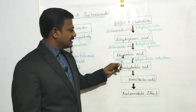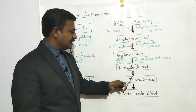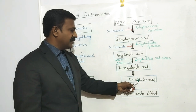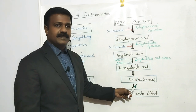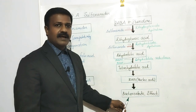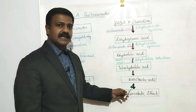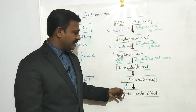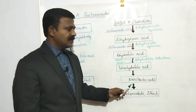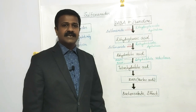So, once it inhibits these steps, it does not allow the synthesis of folic acid. Therefore, there is no formation of nucleic acid in the bacteria, and thereby it produces the bacteriostatic effect — it does not kill the bacteria but prevents the growth and multiplication of bacteria. These are all about the mechanism of action of sulfonamides.